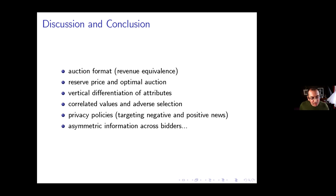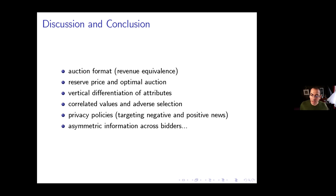Andrea asks: when thinking about digital ad auctions, a lot of the time the auctioneer uses information to bias the mapping between bids and allocation — for example, click-through rate bias in Google auctions. In your model you're keeping the auction given and trying to alter competition through information. Is there any relation between the two? By pooling together high types, you are also creating a lot of competition among them.